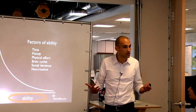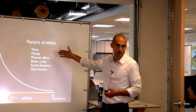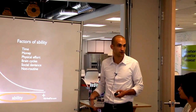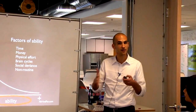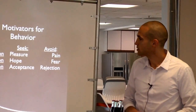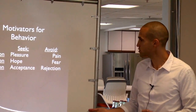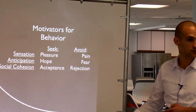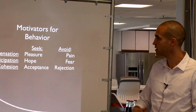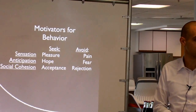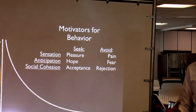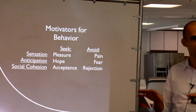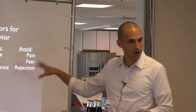Ability is about making something easier by reducing cost, time required, physical effort, brain cycles, social deviance, or non-routine nature. Any time you make any of these things easier or harder, you can increase or decrease behavior. Motivation has six factors: seeking pleasure, avoiding pain, seeking hope, avoiding fear, seeking social acceptance, and avoiding social rejection. When you look at the world through this lens, you'll see that most behaviors you do day in and day out have all three things — motivation, ability, and trigger — present.